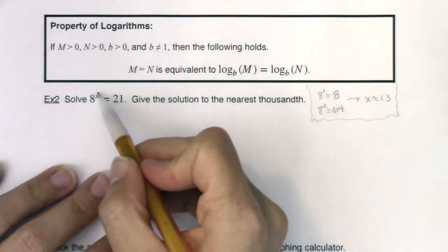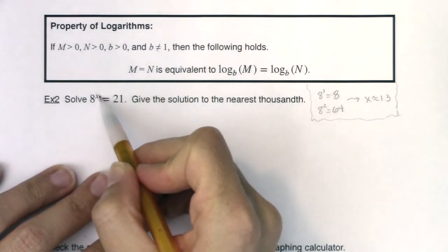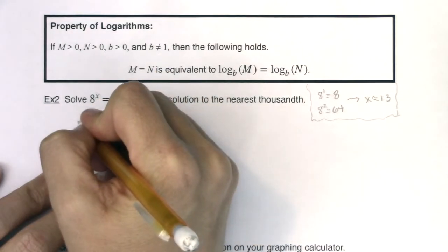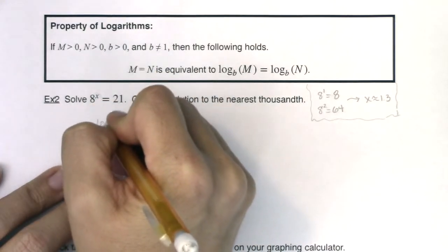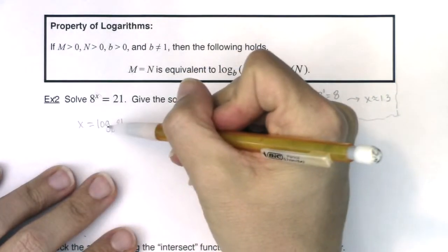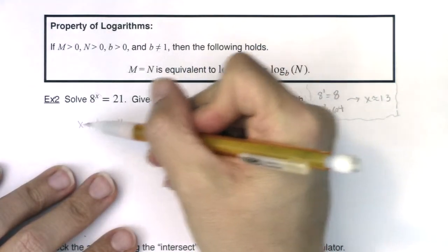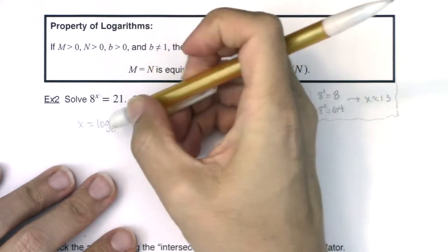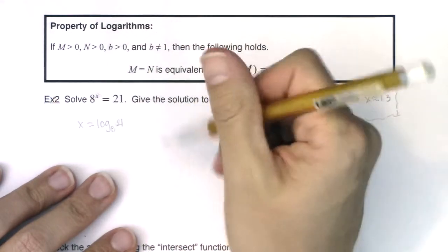So we want to solve for the exponent. We literally want the number that we need to tack on to base 8 to get to 21. So here, I would say x is equal to log base 8 of 21. Because keep in mind, a logarithm is an exponent. It's quite literally the exponent you need on 8 to get to 21, right? So that's what x is equal to.